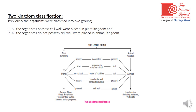Examples of the plant kingdom include bacteria, algae, fungi, bryophytes, tridiophytes, gymnosperms, and angiosperms. Invertebrates including protozoa and vertebrates were placed in the animal kingdom.